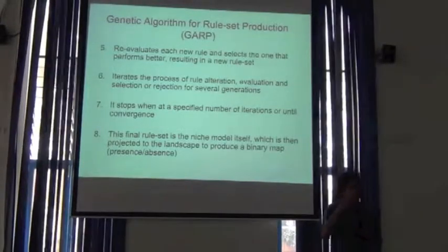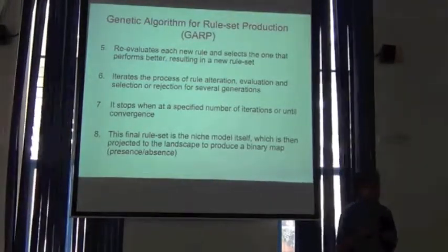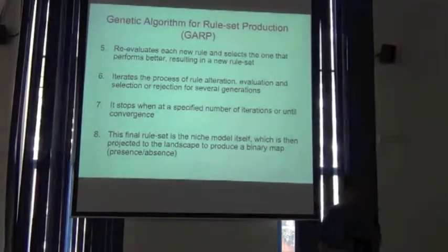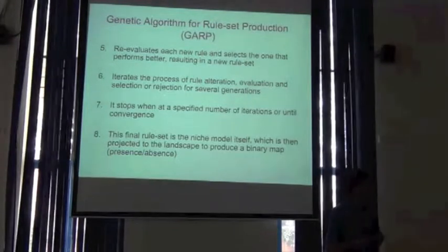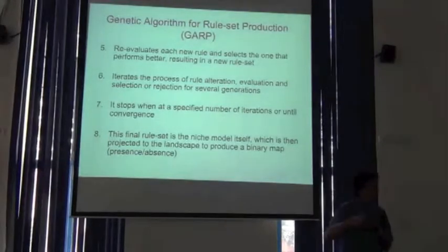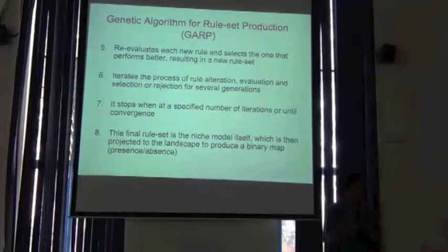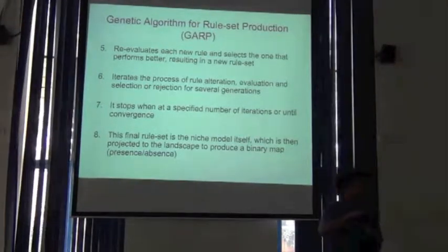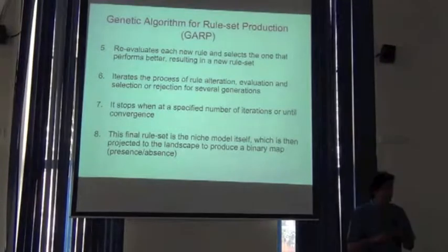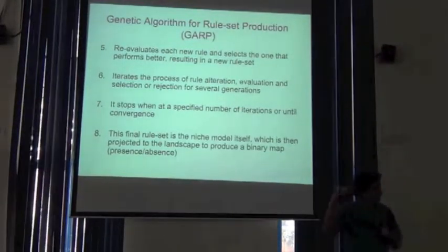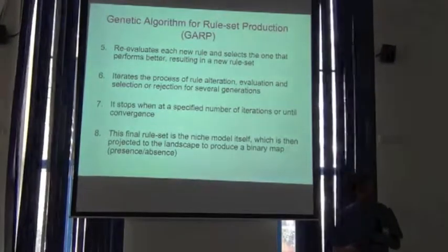It repeats this process of rule generation, rule evaluation, substitution, and validation for as many iterations as specified by the user, or until it converges — meaning the overall performance of the rule set no longer improves. At the start, each generation of the rule set improves prediction capacity, but there is a point where improvement stops and the process halts, ending with a set of if-then rules that characterize the conditions where the species is present or absent.